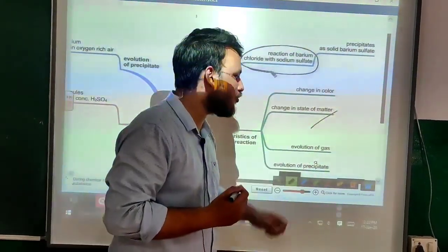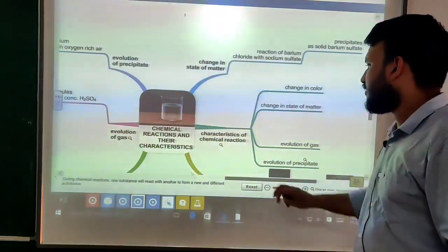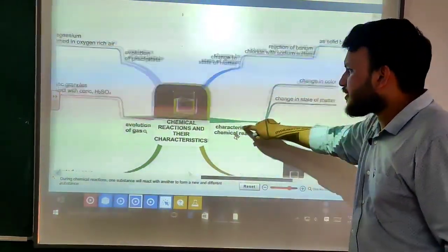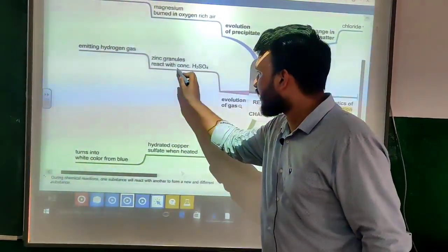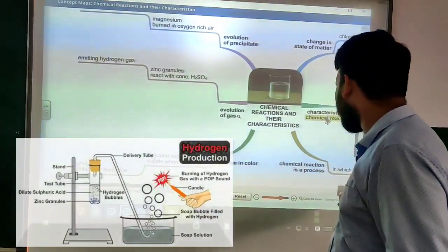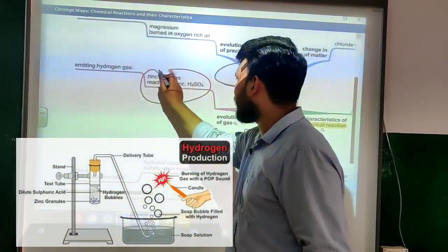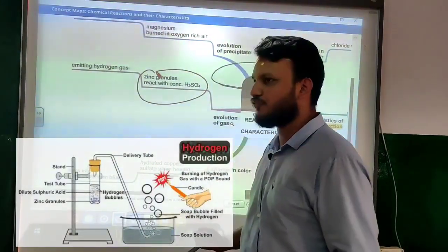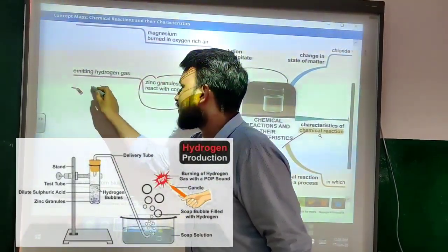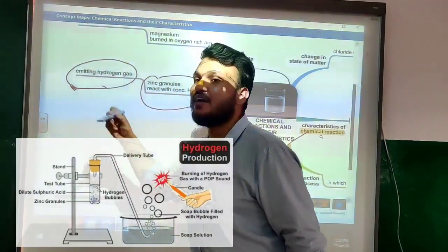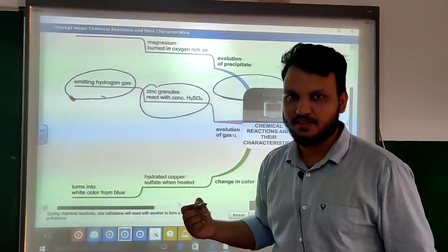The third characteristic is evolution of gases. This also has a reaction: when zinc granules are reacted with concentrated H2SO4, it will emit hydrogen gas. It will produce or emit hydrogen gas. That is the evolution of gas as a characteristic of chemical reaction.